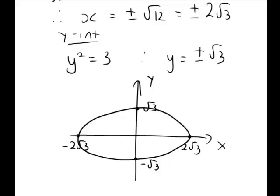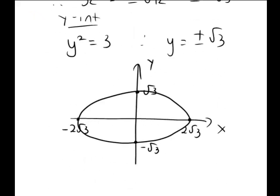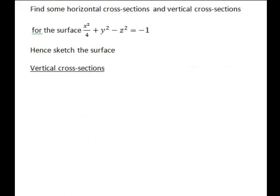If we tried z equals negative 2, we'd get the same ellipse. So the horizontal cross-sections show that the surface does not exist between z equals negative 1 and 1. At z equals plus or minus 1 it's a single point, and then it expands to have elliptical cross-sections. This gives us a picture of what the surface looks like when sliced horizontally, but we also need the vertical cross-sections to get the full picture.